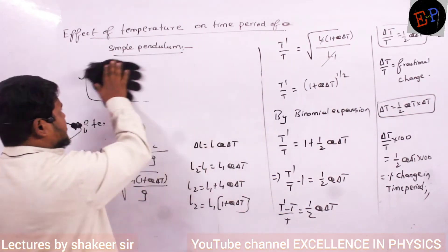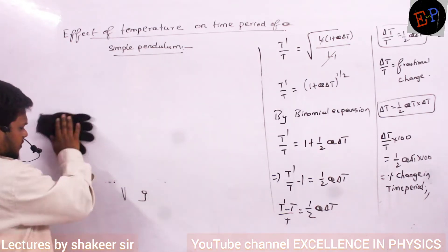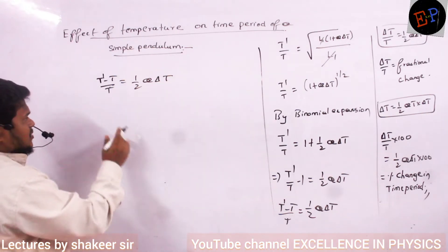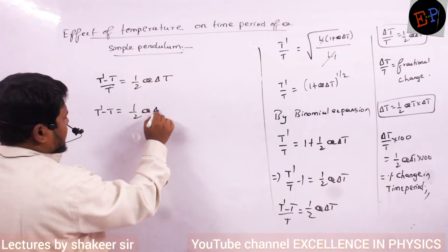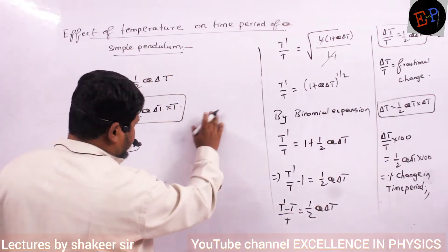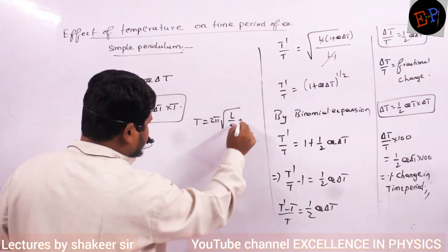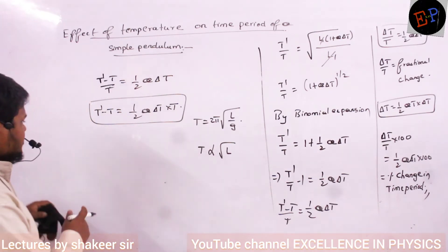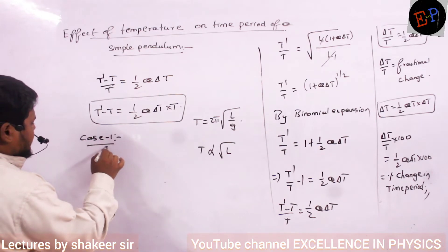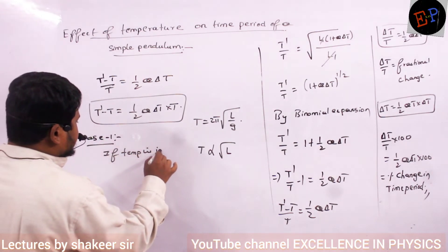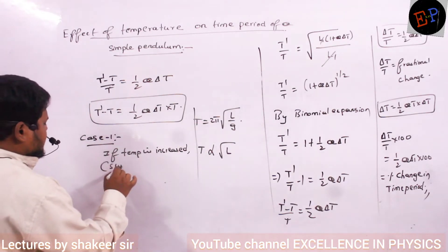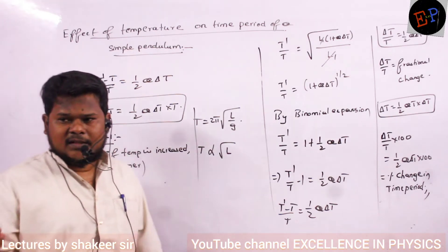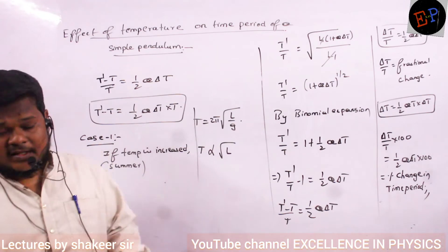Let us see more concepts on change of time period for a simple pendulum. T dash minus T divided by T equals half α·∆T. T is directly proportional to root L. Case 1: if temperature is increased — in summer season temperatures rise — what happens to the length of the simple pendulum? Length increases in summer.